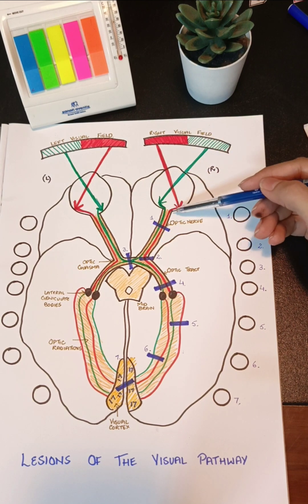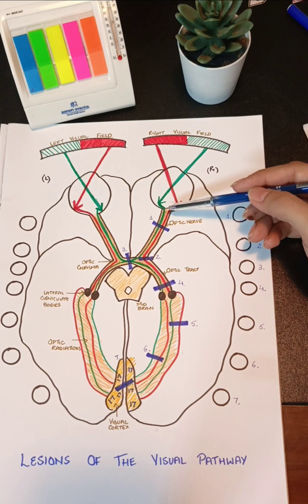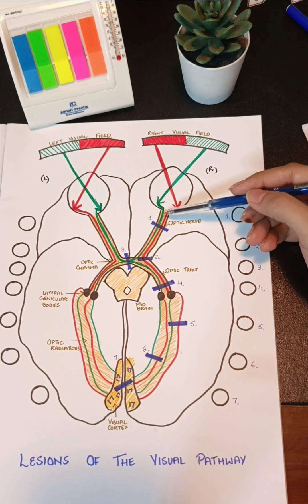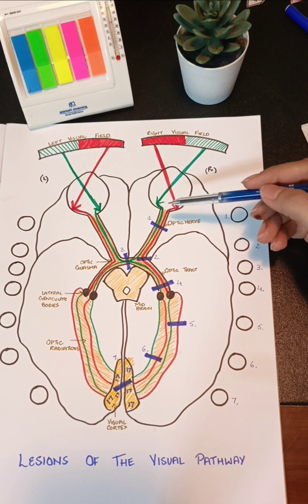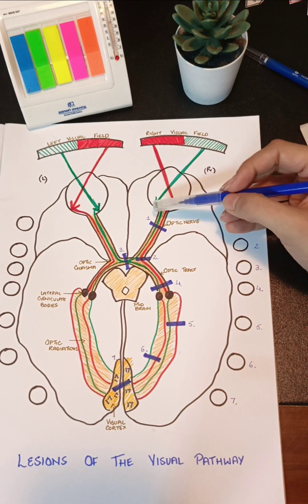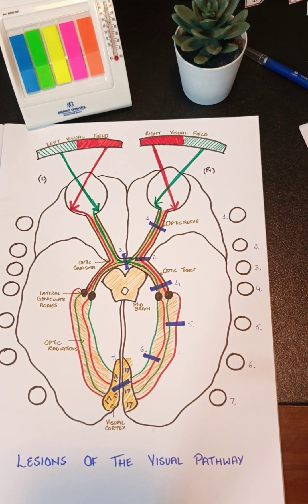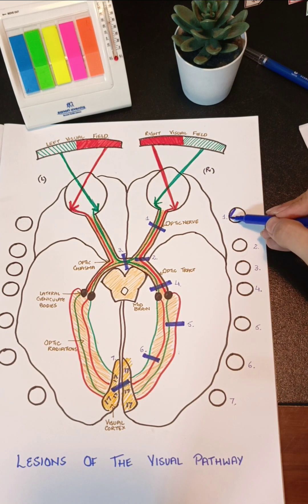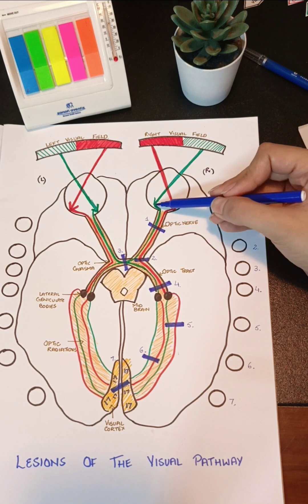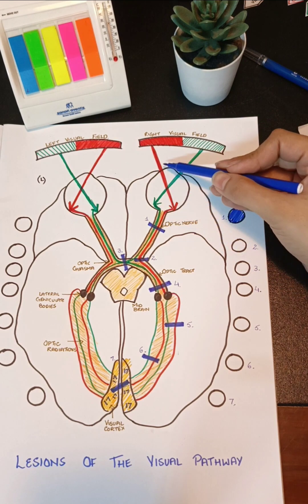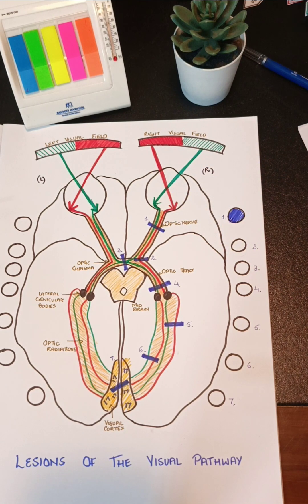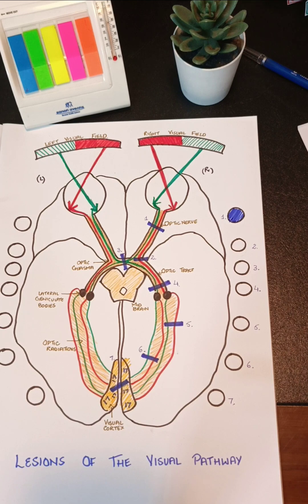With this information we can understand the impact of lesions on our vision. Lesion number one is at the optic nerve. If there is a lesion in the right optic nerve, there will be complete loss of vision on the right side, because there is interruption of both the nasal and temporal fibers of the right eye. So a lesion of the right optic nerve produces the condition we call monocular vision loss.